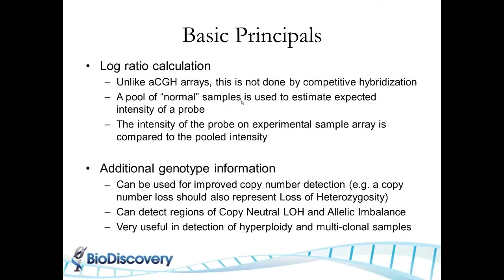SNP arrays may have some drawbacks in calculating the log ratio, but they provide additional information from genotype data. One advantage is the ability to detect loss of heterozygosity (LOH), which can corroborate copy number loss. SNP arrays can also detect copy neutral LOH, where the copy number doesn't change but heterozygosity is lost, as well as allelic imbalance. They are also very useful for detecting hypoidy, aneuploidy, and multi-clonal samples.